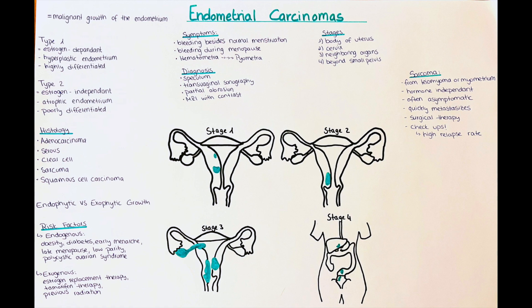The major symptom is bleeding outside of a normal menstruation, or during menopause, where no menstruation should occur. Every bleeding during menopause should be investigated further to eliminate endometrial cancer. One complication to keep in mind is that if the tumor involves the cervix, the cervix might be occluded, making it difficult or impossible for blood shed during menstruation to flow out. This can lead to hematometra — where the uterus fills partially or totally with blood — and pyometra, where this blood becomes infected and pus is formed.